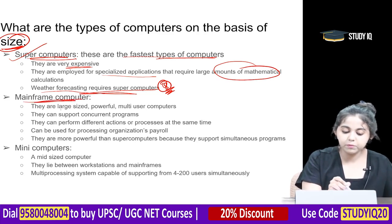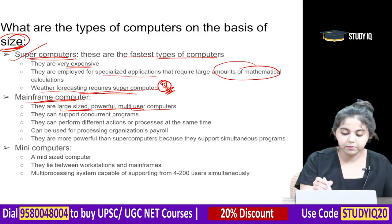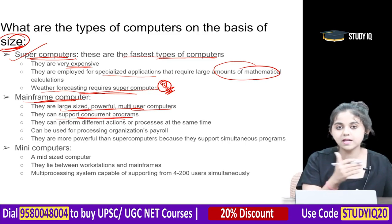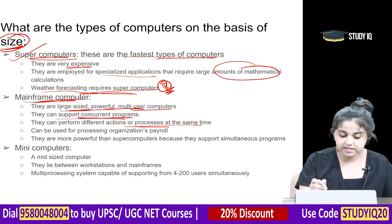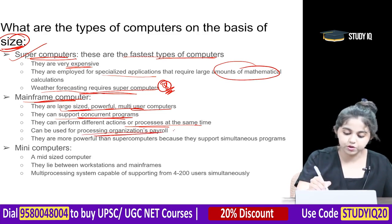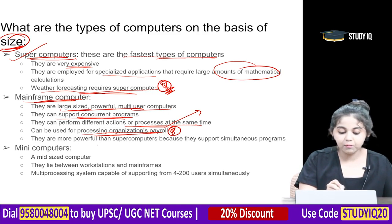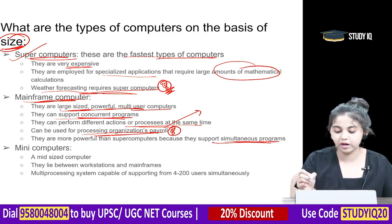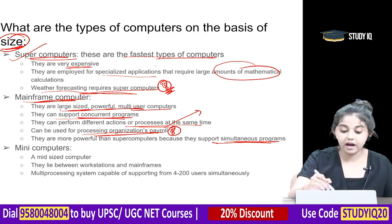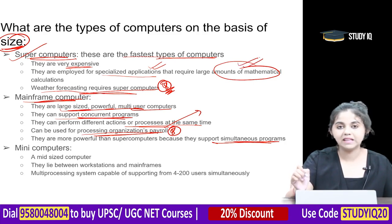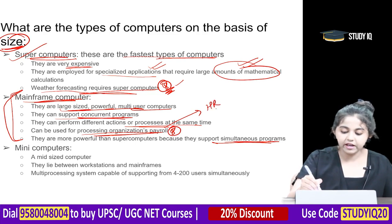Mainframe computers are large, powerful, multi-user computers that can support concurrent programs and perform different actions at the same time. They are used for processing an organization's payroll. They are considered more powerful than supercomputers because they support simultaneous programs. Mainframe computers are used for HR activities like payroll in large organizations.